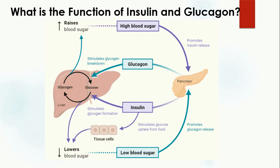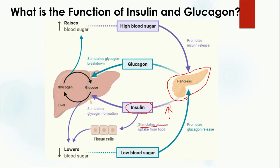First of all, insulin and glucagon are both produced by the pancreas. The pancreas produces the insulin hormone, which stimulates glucose uptake from food. Insulin is produced when a high glucose level is present in the blood.